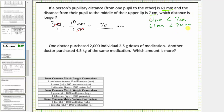When giving the answer, we give the distance using its original units. Therefore, we say the distance of seven centimeters is longer than sixty-one millimeters.